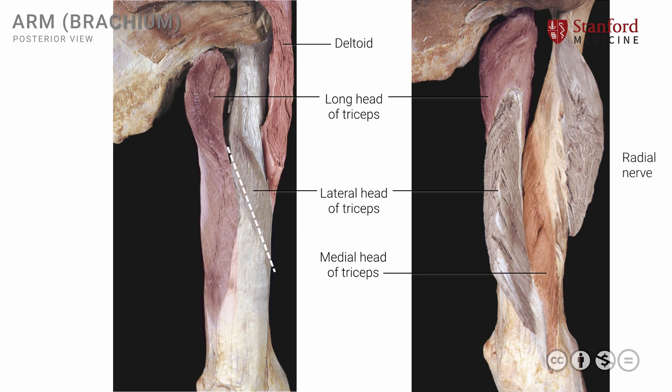Note the neurovascular structures in the spiral groove. The radial nerve is seen here, and accompanying the radial nerve is the deep brachial artery, which is also seen here. These two structures wrap around the mid-shaft of the humerus in the spiral groove and have a propensity to get injured in fractures around this region.